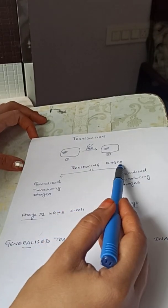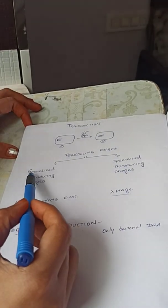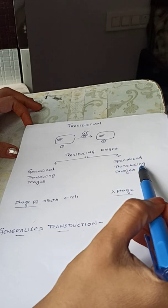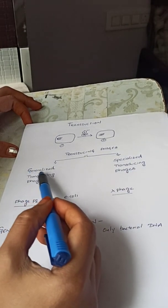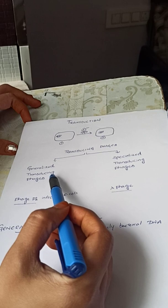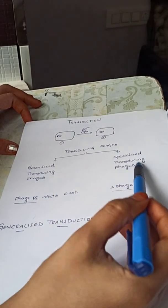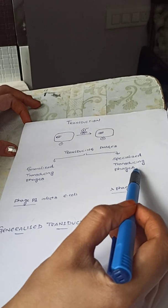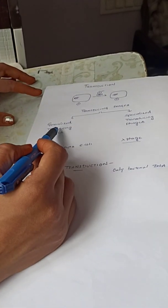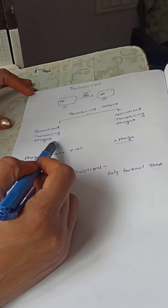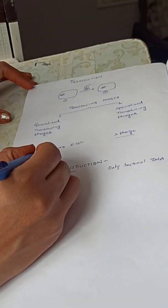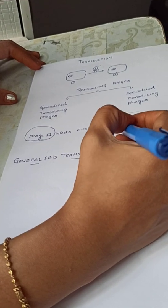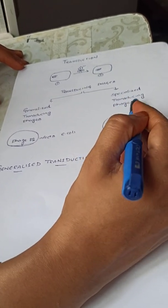These transducing phages are of two important types: generalized transducing phages and specialized transducing phages. Generalized transducing phages carry out generalized transduction. An excellent example of generalized transducing phages is phage P1, whereas lambda phage is a good example of specialized transducing phages.